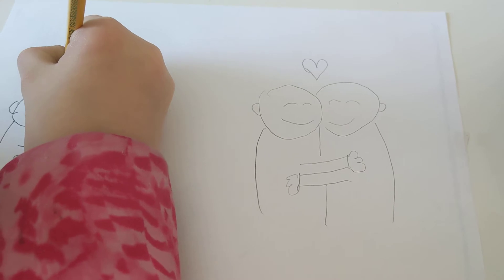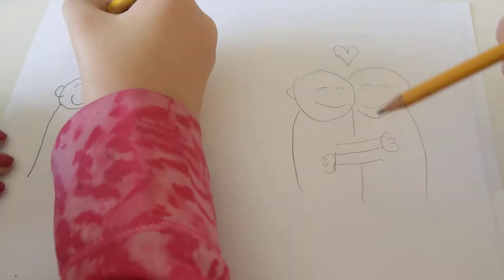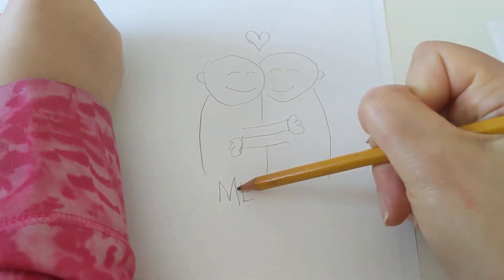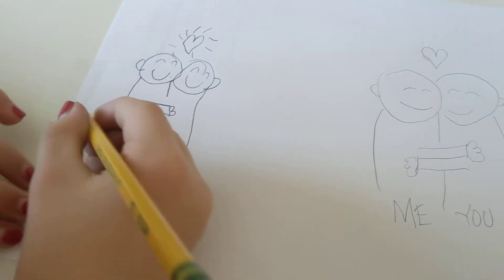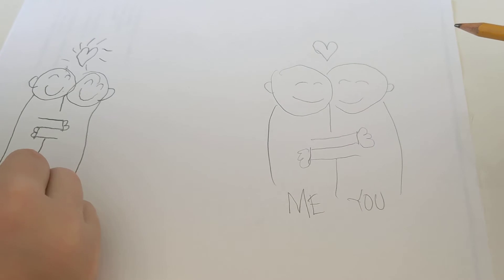I think they're loving each other because they're hugging. And then let's name them. I'm going to put me and you. But you could put mom and Arlen, Arlen and dad, you could put whoever.